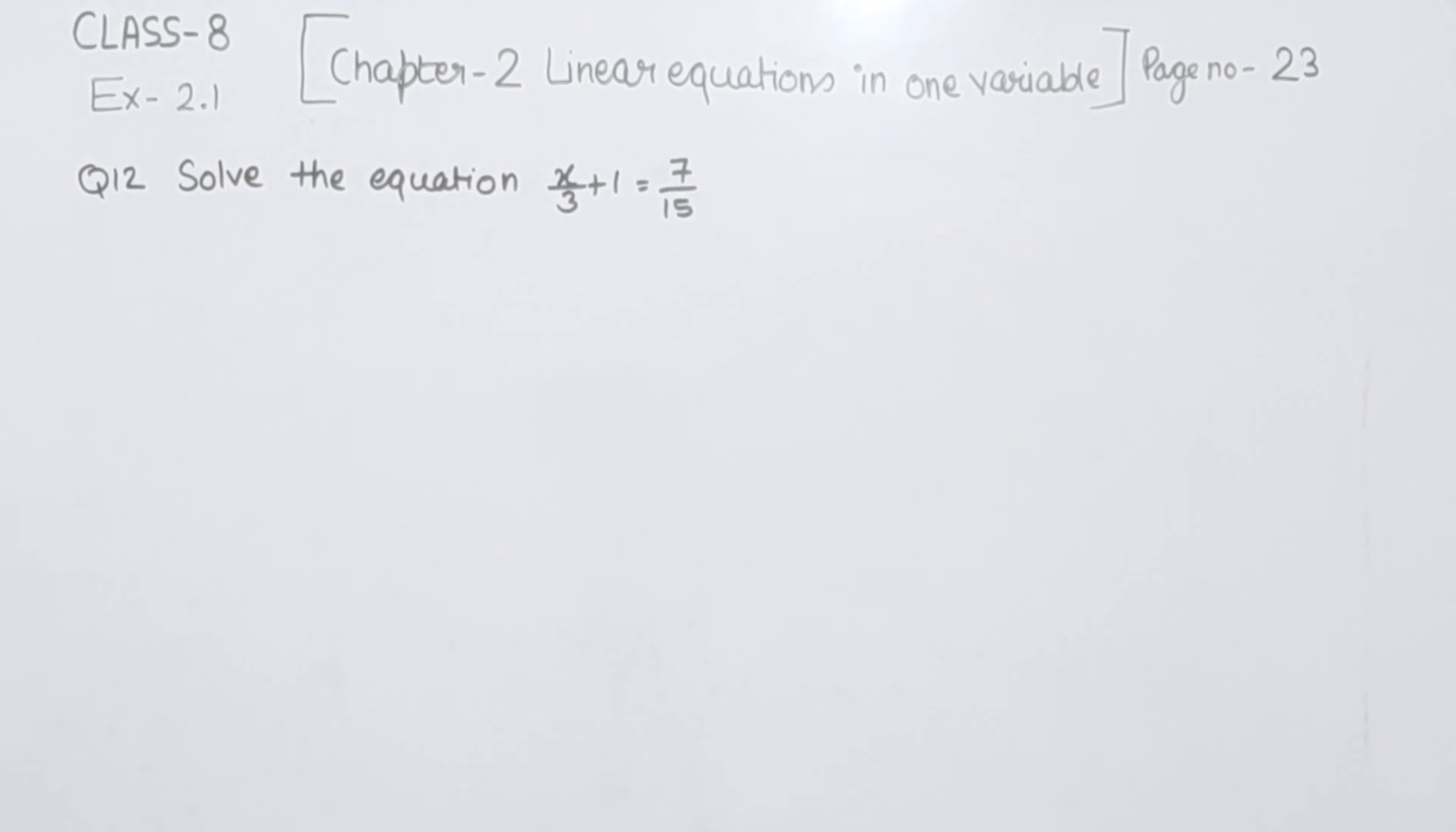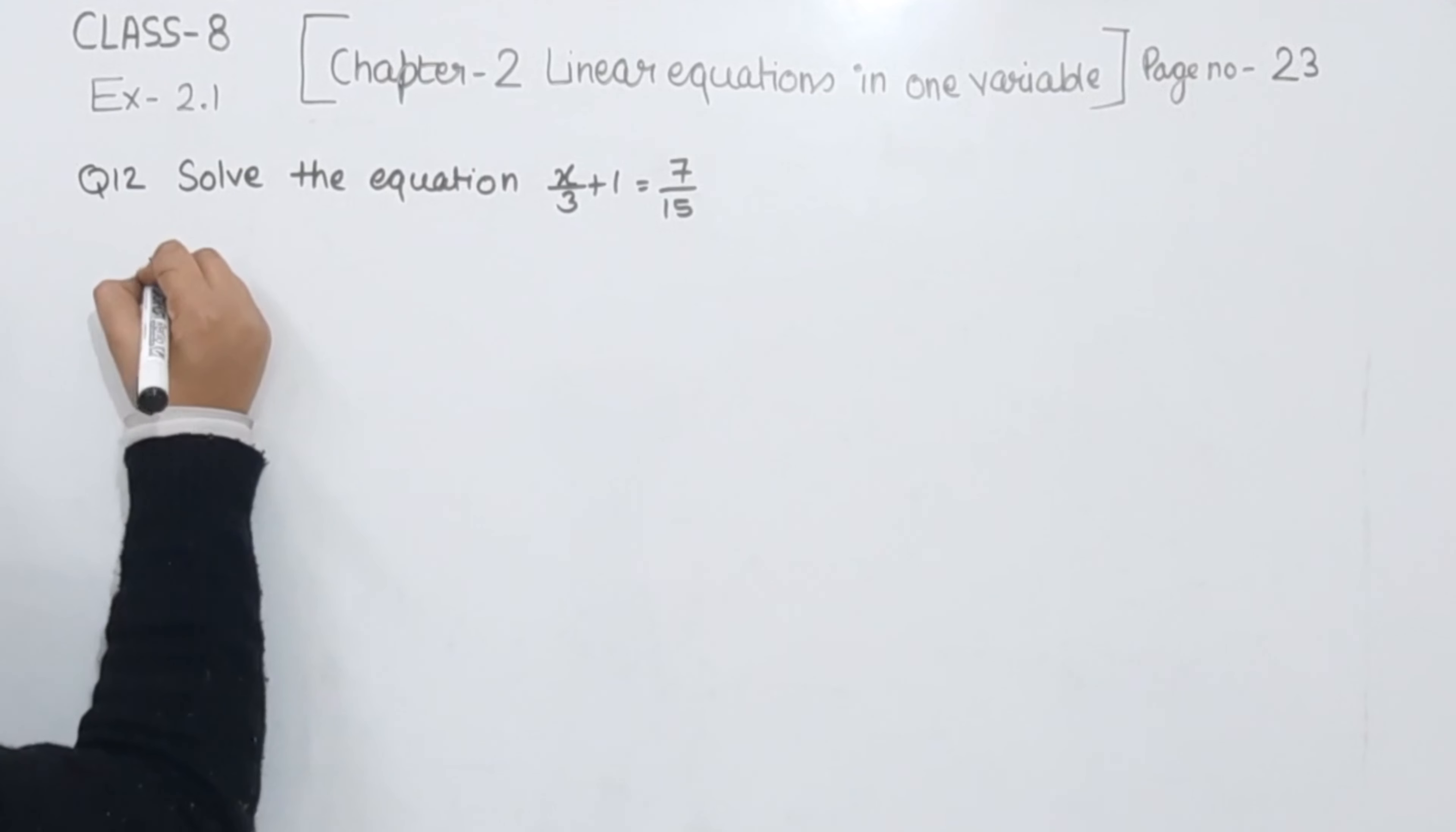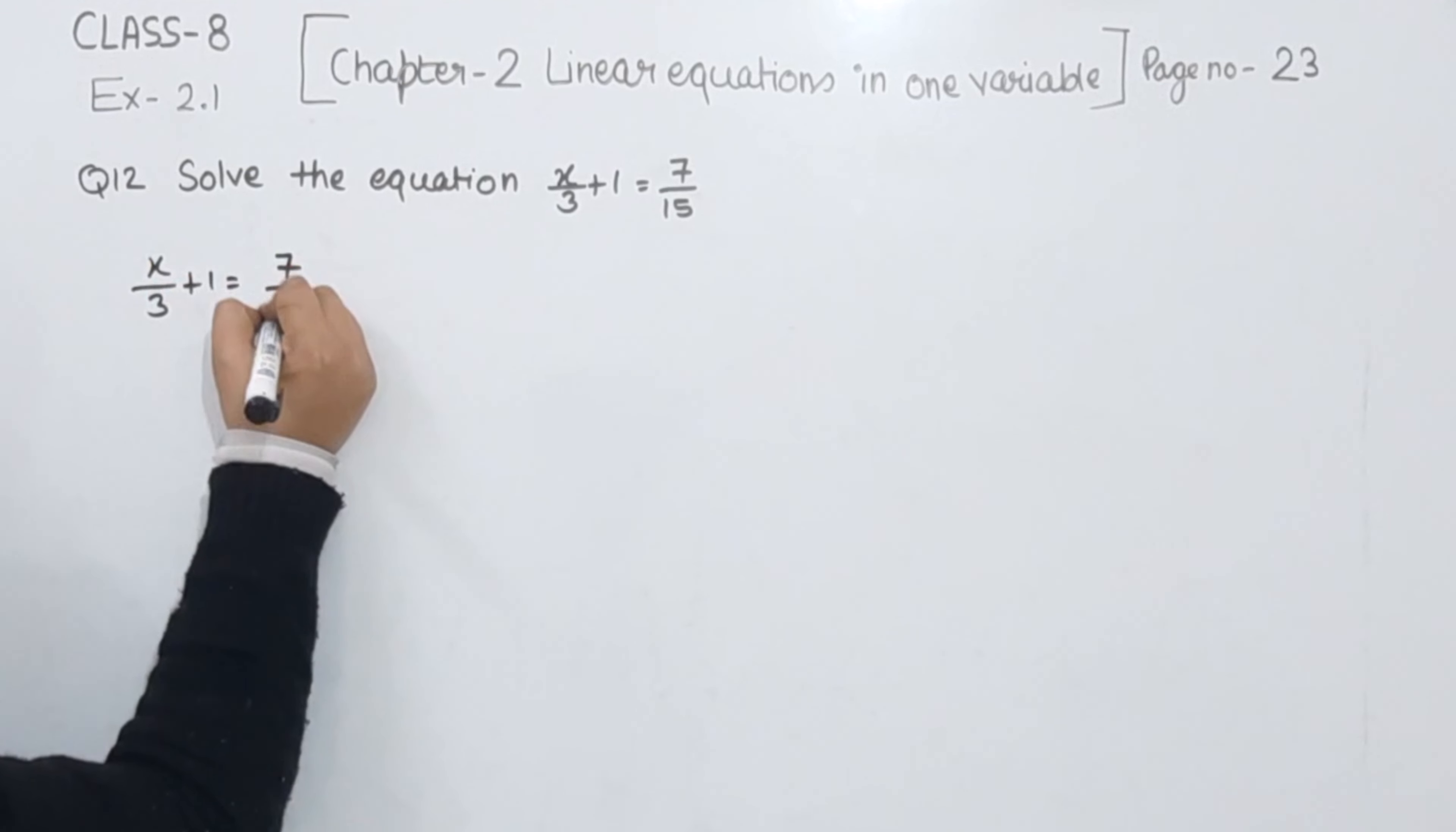We have the equation as x/3 + 1 = 7/15. So first of all I am going to write the equation here: x/3 + 1 = 7/15.